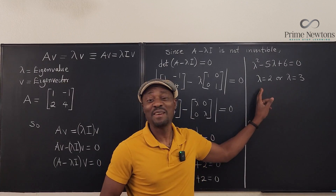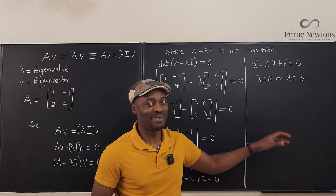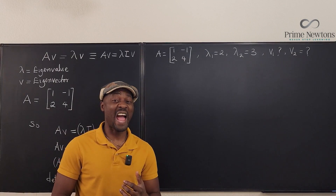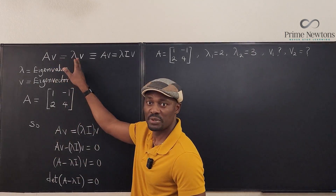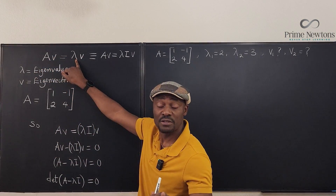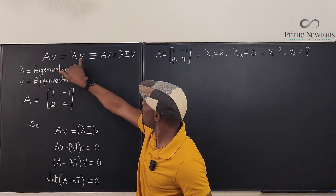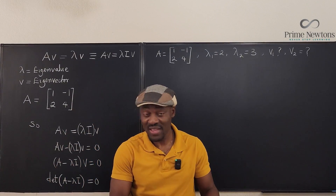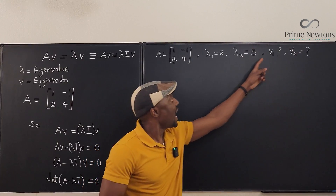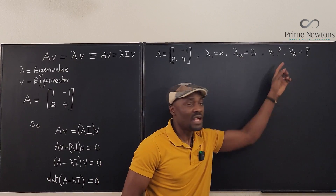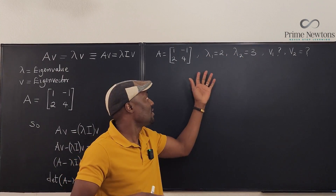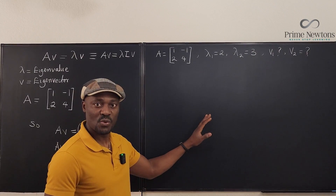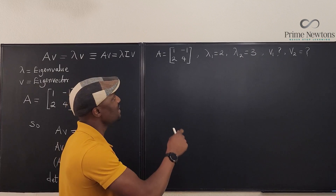Now that we have the eigenvalues, we need the eigenvectors. In other videos I'll show you the applications — these things save lives! We have two eigenvalues λ₁ = 2 and λ₂ = 3, and each has its own eigenvector v₁ and v₂. There are special cases where eigenvalues or eigenvectors coincide, but let's take the normal situation.